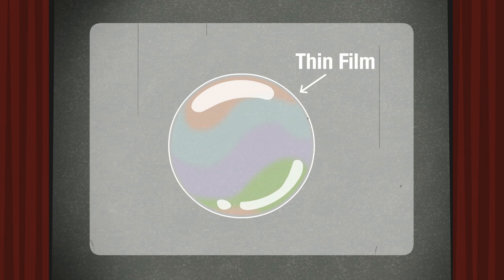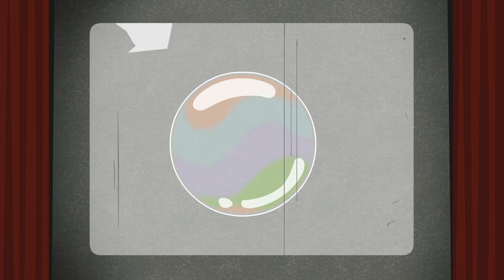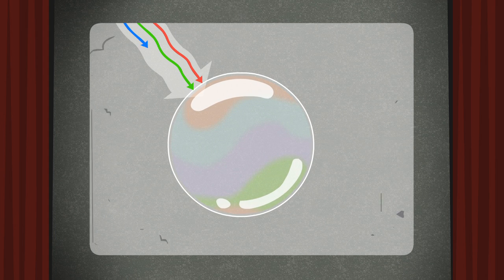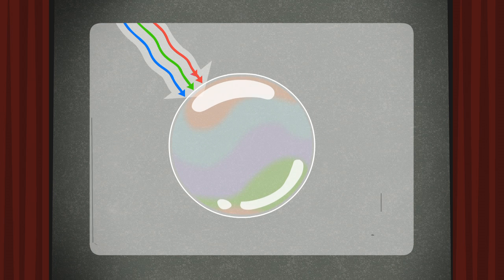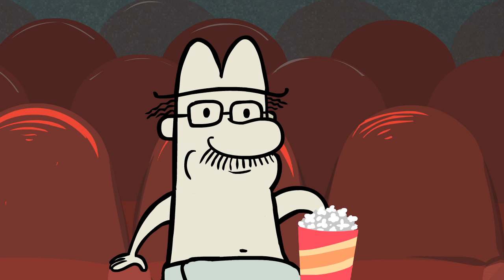A soap bubble is a thin film, but its thickness varies across the surface. Because light is made up of red, green, and blue light waves, different amounts of each color are reflected off the surface. Let's find out why.